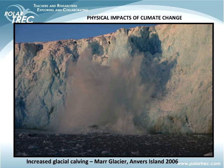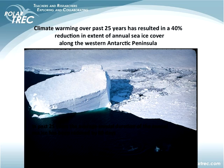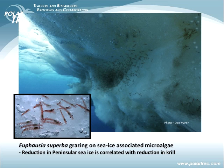Dr. McClintock here. I want to talk more about impacts of warming on coastal ice. As Dr. Amsler mentioned, there is an annual sea ice that forms, and this has been retreating significantly along the western Antarctic Peninsula — about a 40% reduction in its extent. This has important consequences for a number of organisms that live in tight association with that sea ice.